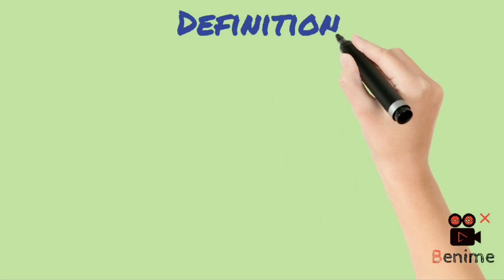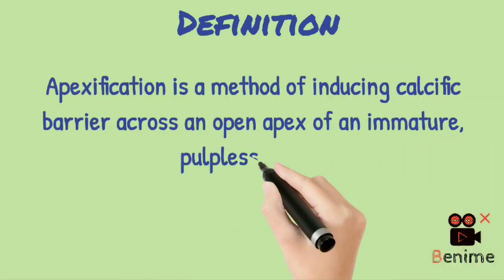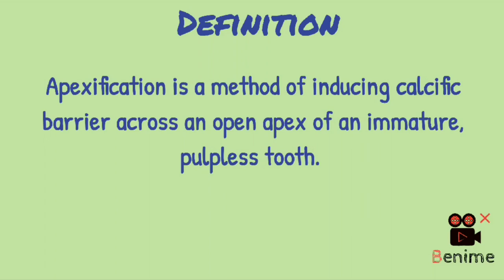Let's analyze the definition first. Apexification is a method to induce a calcific barrier. So what it induces is apical closure by the formation of mineralized tissue. Now across an open apex of an immature pulpless tooth, what it means?